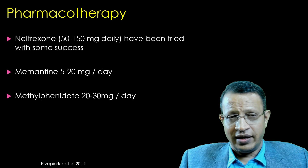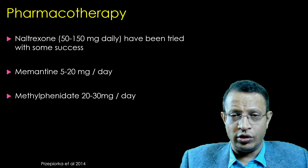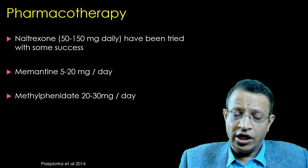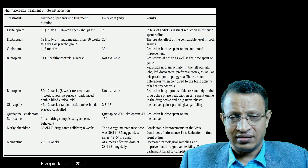Other drugs tried include naltrexone, memantine, and methylphenidate. However, to date no studies have robustly shown that any medicine gives 100% improvement. These medicines are very helpful for comorbid conditions. Studies including open-label trials and RCTs have been conducted, but systematic evidence remains limited.